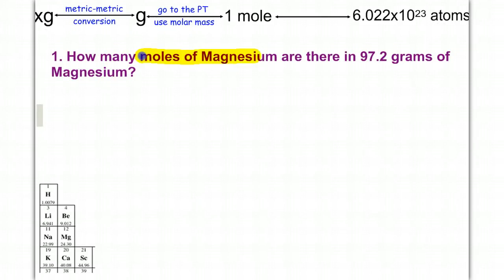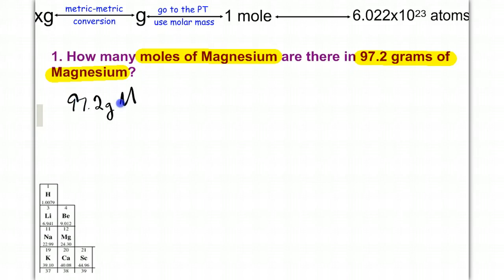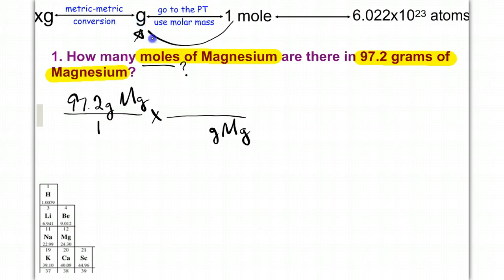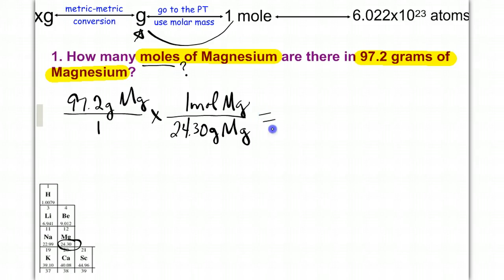How many moles of magnesium are there in 97.2 grams of magnesium? I'm going to take my given, 97.2 grams of magnesium, and put it over one. I want to get from grams to moles, so we go from gram to mole. With the exception of your given, you always use one mole. We go to the periodic table — the mass for magnesium is 24.30. Grams of magnesium cancel, and I'm at moles of magnesium.